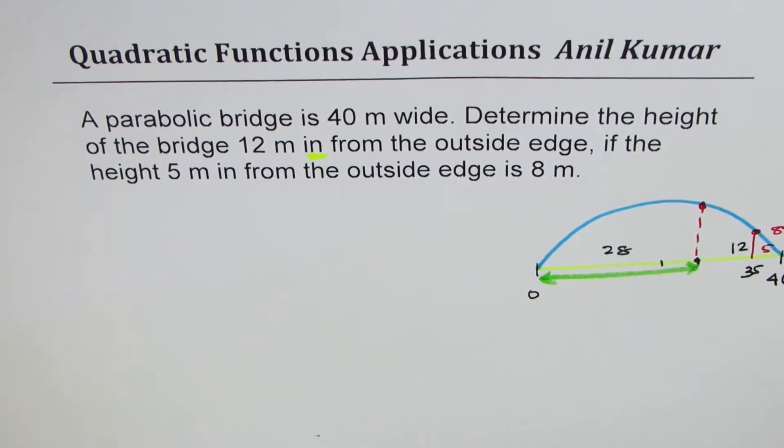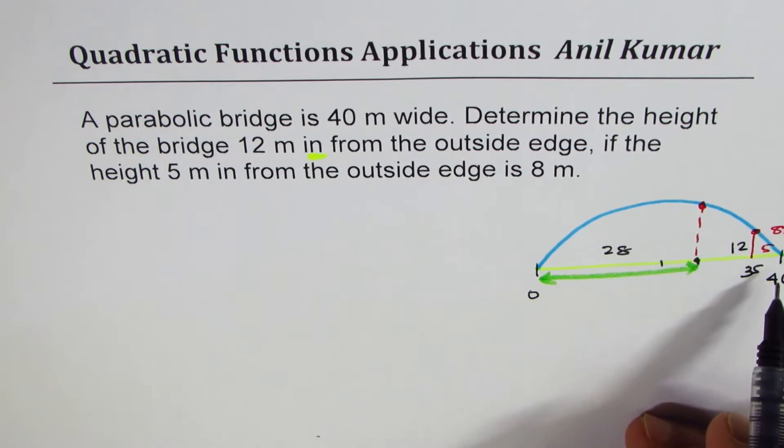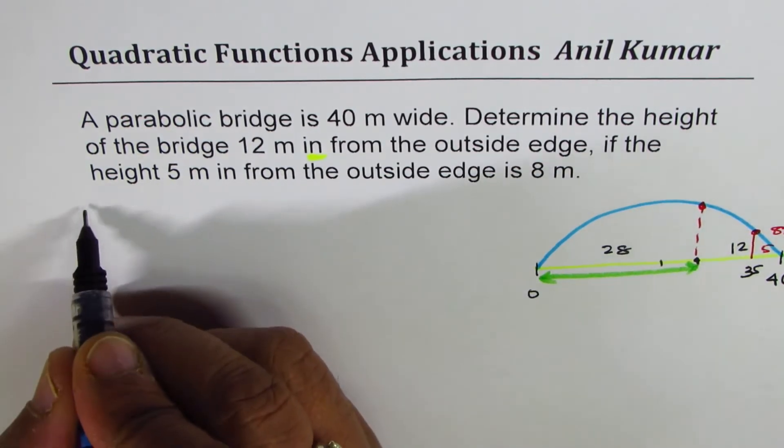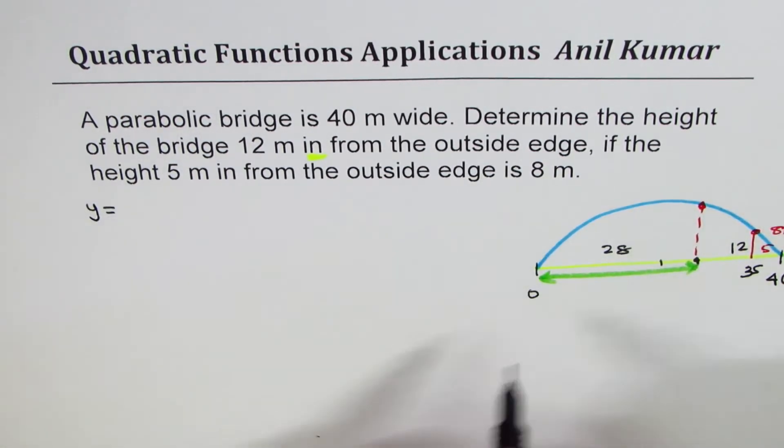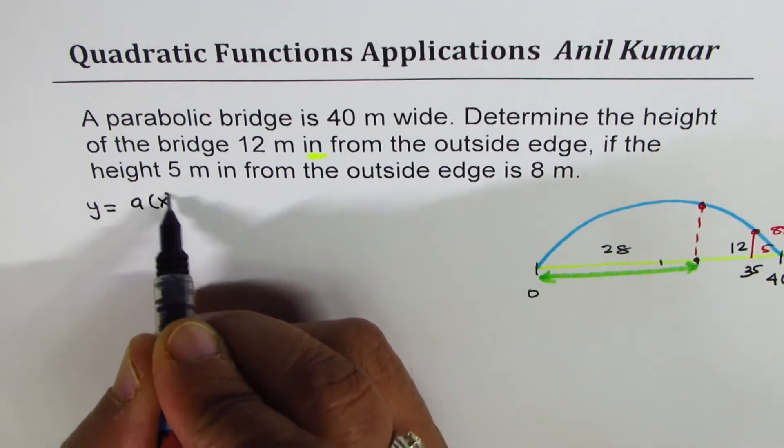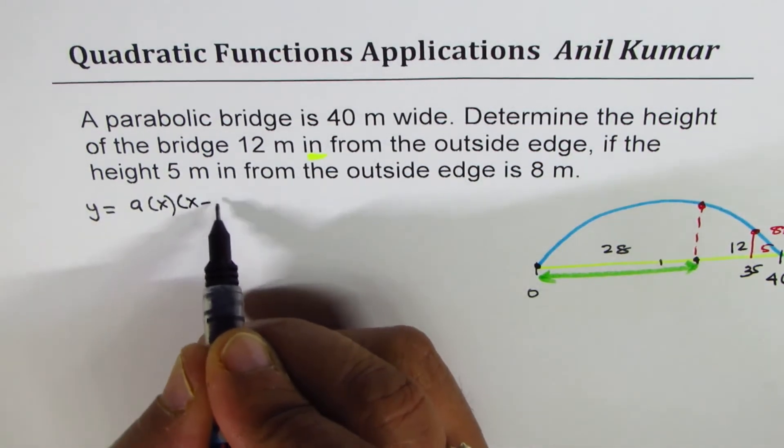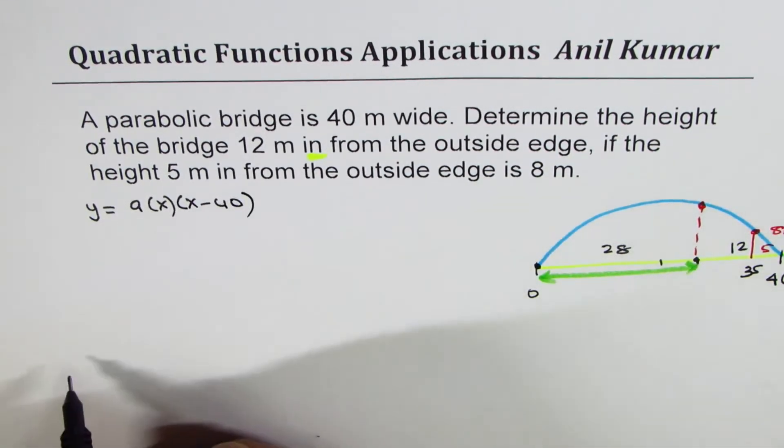The first step is to get the equation of the parabola. You can anytime pause the video, answer, and then look into my suggestions. We see y equals to a times x - we'll assume this to be the first zero - and the other one at 40, x minus 40.